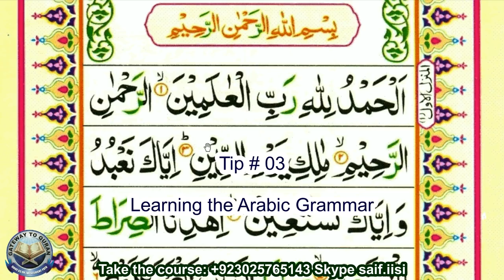For example, in Arabic: 'na'budu' — 'na' means 'we' and 'budu' comes from 'ibadah', meaning 'worshipping', so 'na'budu' means 'we worship.' If you want to say 'I worship' instead, you add 'a' at the beginning: 'a'budu' means 'I worship.' This is grammar — adding a prefix changes the meaning. Similarly, 'ta'budu' means 'you worship' and 'ya'budu' means 'he worships.' Knowing grammar helps you form new words easily.